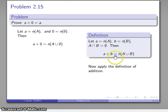So a plus 0 is going to be the cardinality of the union of the two sets. So a plus 0 is the cardinality of the union of the set A with the empty set.